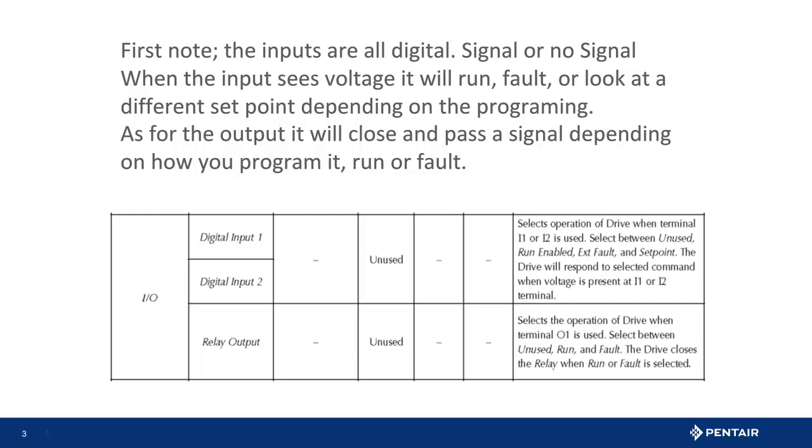Is there an analog input and what does analog mean? Well to answer the first question yes, the transducer input plugged into the AI plus and minus connections. To answer the second question, what is an analog signal? It is a range. A good example is the transducer that reads pressure from 0 to 100 pounds of pressure and anywhere in between.